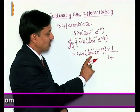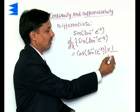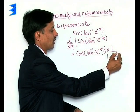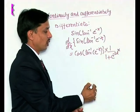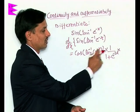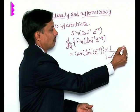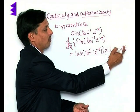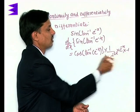So differentiation of tan inverse of e to the power minus x will be 1 upon 1 plus e to the power minus 2x, into e to the power minus x. The derivative of e to the power minus x, and derivative of minus x is minus 1.